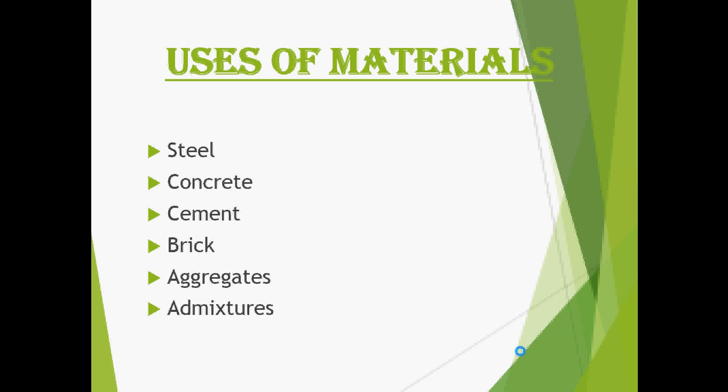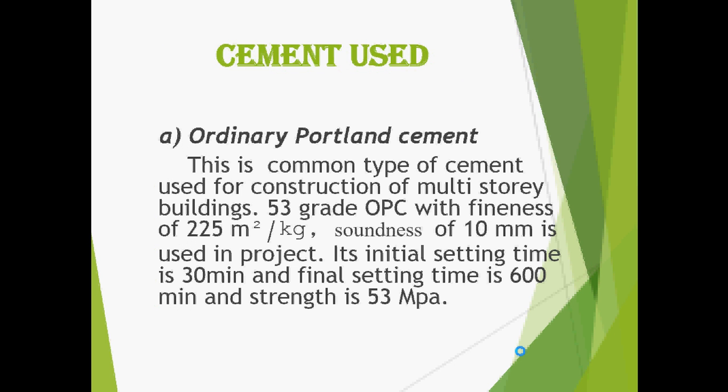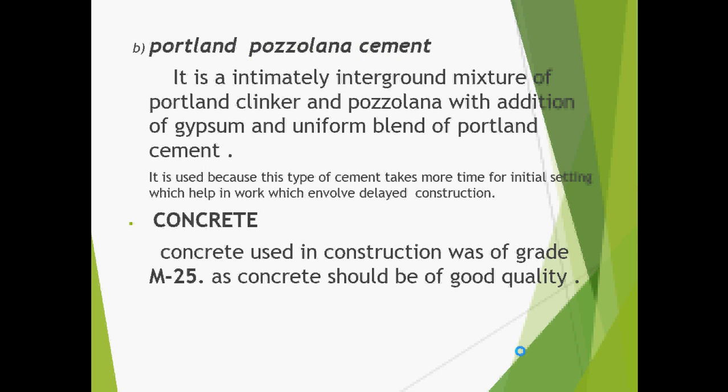These are the major materials used in any construction work: steel, concrete, cement, brick, aggregate, and admixtures. Two types of cement were used in our project — Ordinary Portland Cement and Portland Pozzolana Cement. M25 grade concrete was used, as concrete should be of good quality.